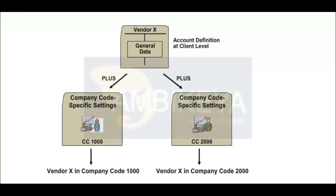Vendor accounts are structured similarly to GL accounts. They are made up of two areas. General Data: a vendor account is defined for all company codes at the client level, and general data such as the vendor's name and address is stored here. Company Code: postings cannot be made to the account for a company code until company code-specific settings have been created. These settings refer only to the relevant company code and include details such as agreed payment conditions or reconciliation account.